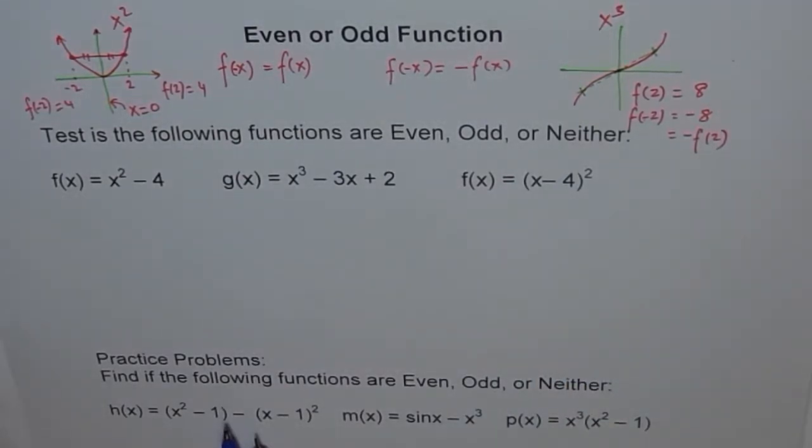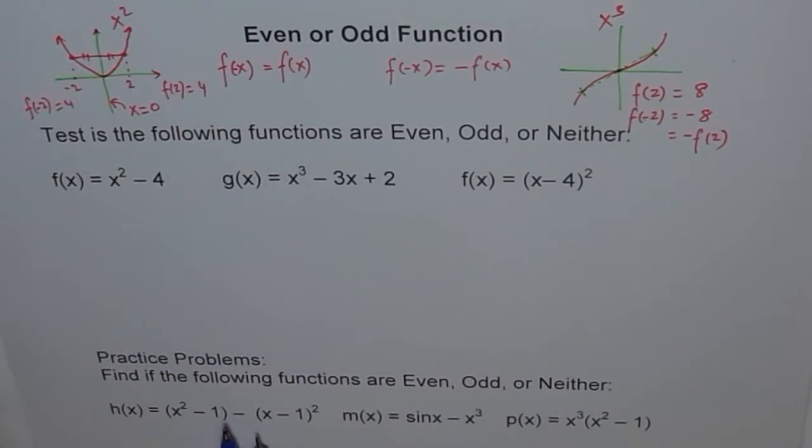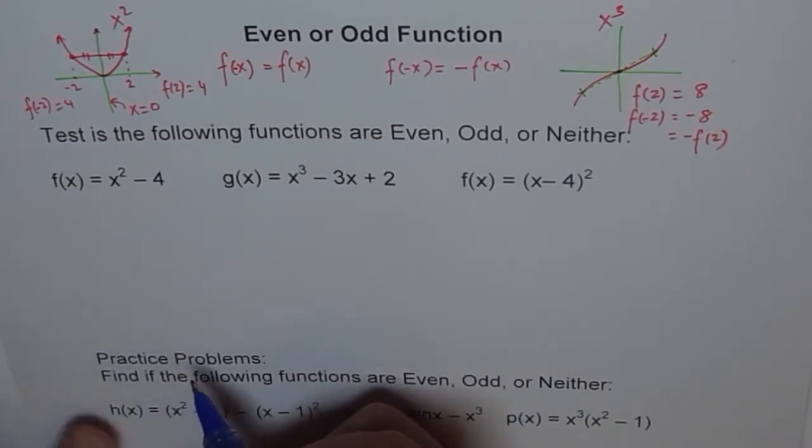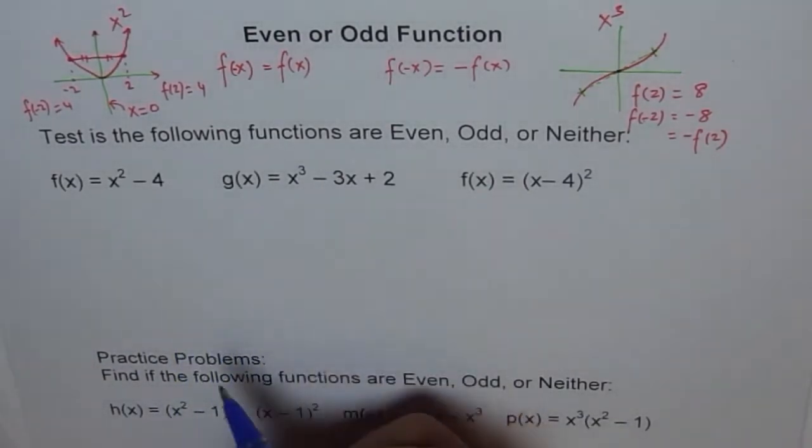Well, there are very few functions which could be even or odd. Most of the functions are neither. They are not even nor they are odd. Well, now let's try to analyze the functions given to us here and check whether they are even or odd. One way, we can always graph them and figure it out. Second is we can do it algebraically. Algebraically, easy calculations.